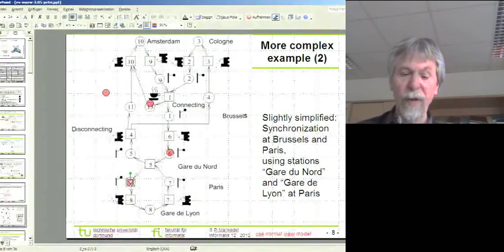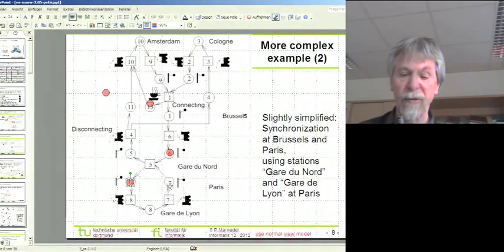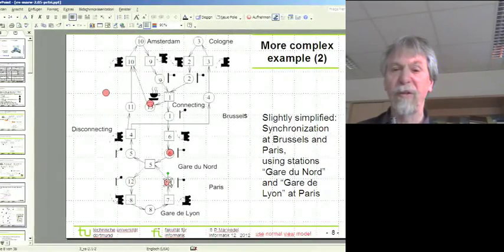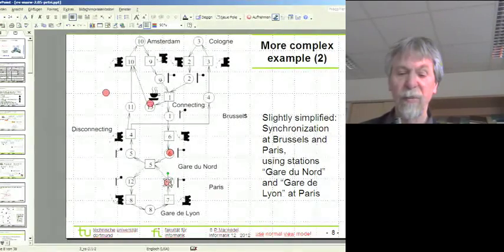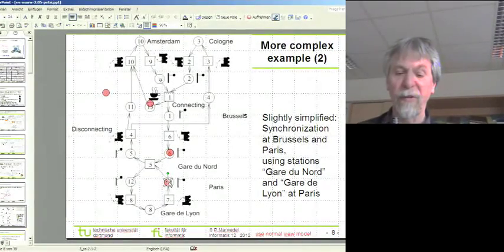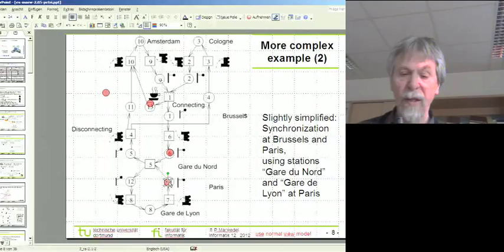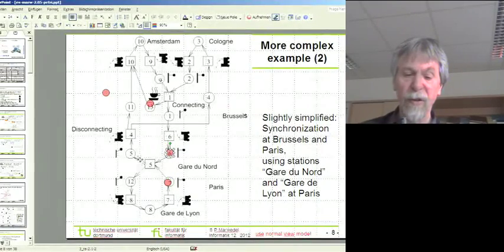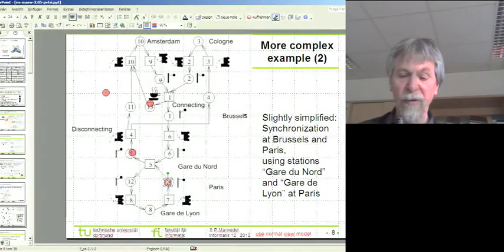Now we assume that the traffic at the Gare du Nord has to be synchronized with trains to southern Paris. For the sake of simplicity we are assuming a somewhat simplified situation there. We assume that we are only synchronizing with trains that go to Gare de Lyon, which is a station in the south of Paris. Now we assume that at Gare du Nord we synchronize the trains. So both trains are now ready for departure.